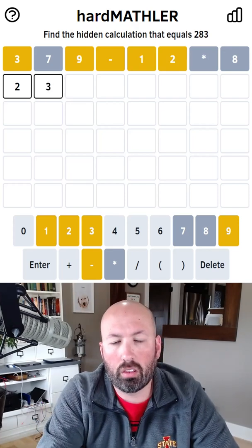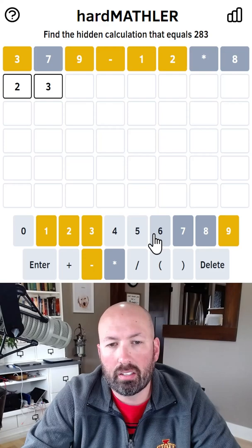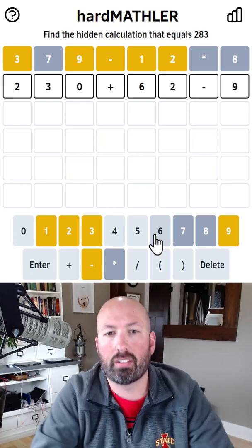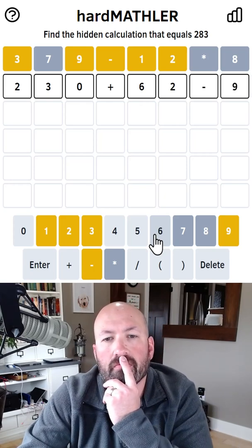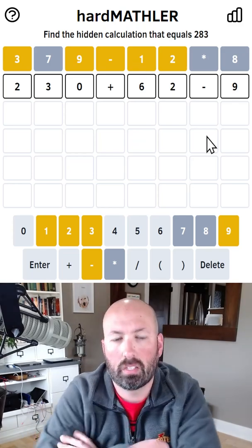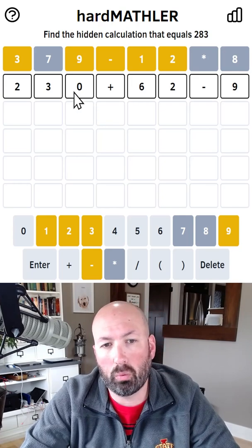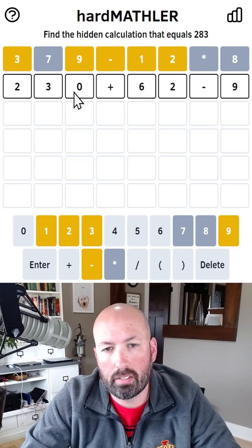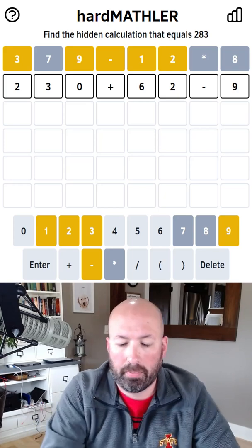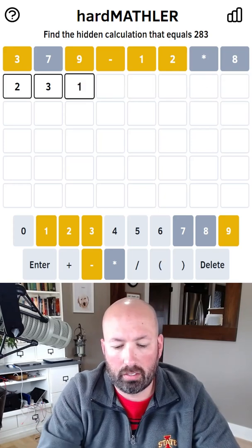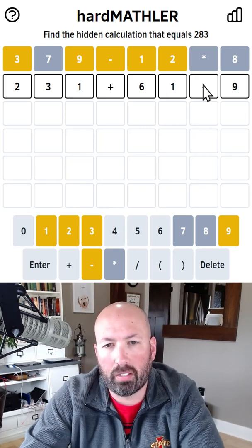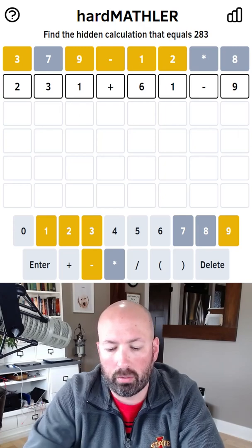All right, what about 230 something? Then we could add six, so 230 plus 62 minus nine would work. There's no one in there though. We need to have a one. We could do 231 plus 61. That doesn't let us use a zero. We don't have a zero, four, or five in there at all. All right, I'm going to do 231 plus 61 minus nine. That's not letting us check as many new digits, but we can find out about the operations and see if we're getting close.